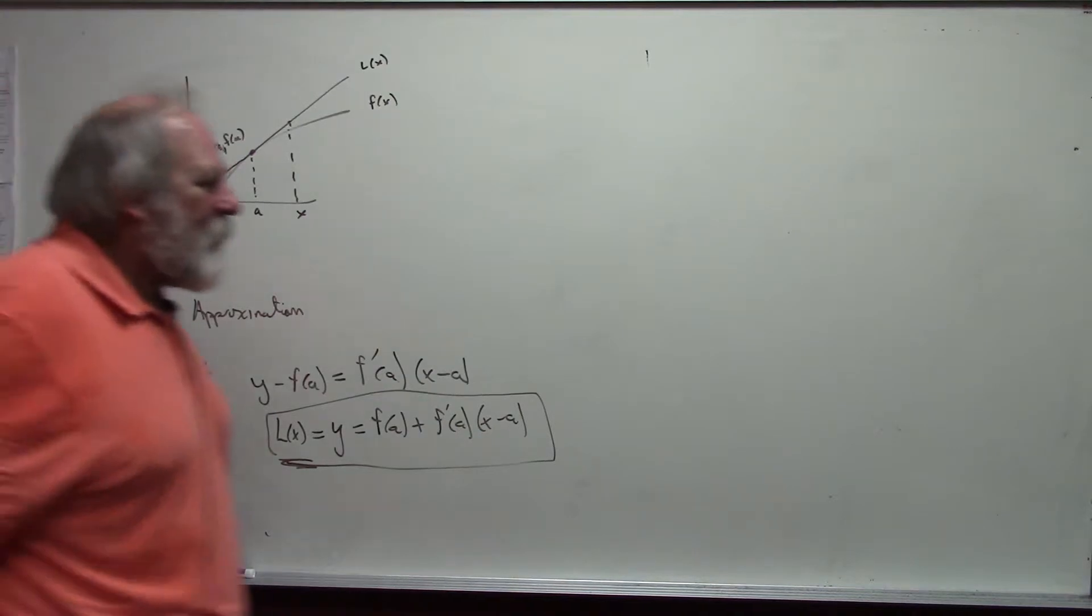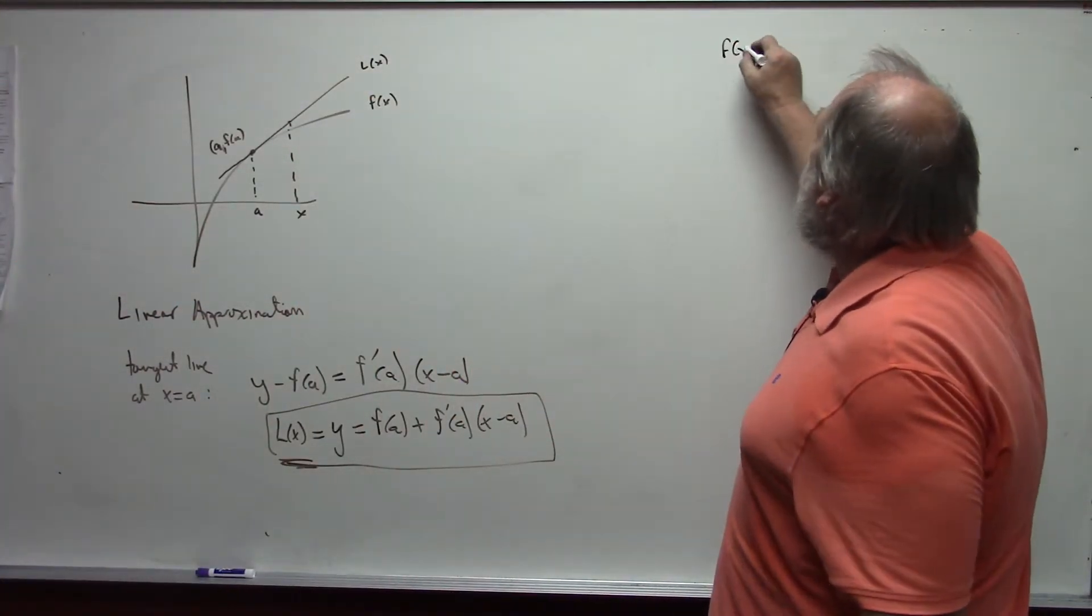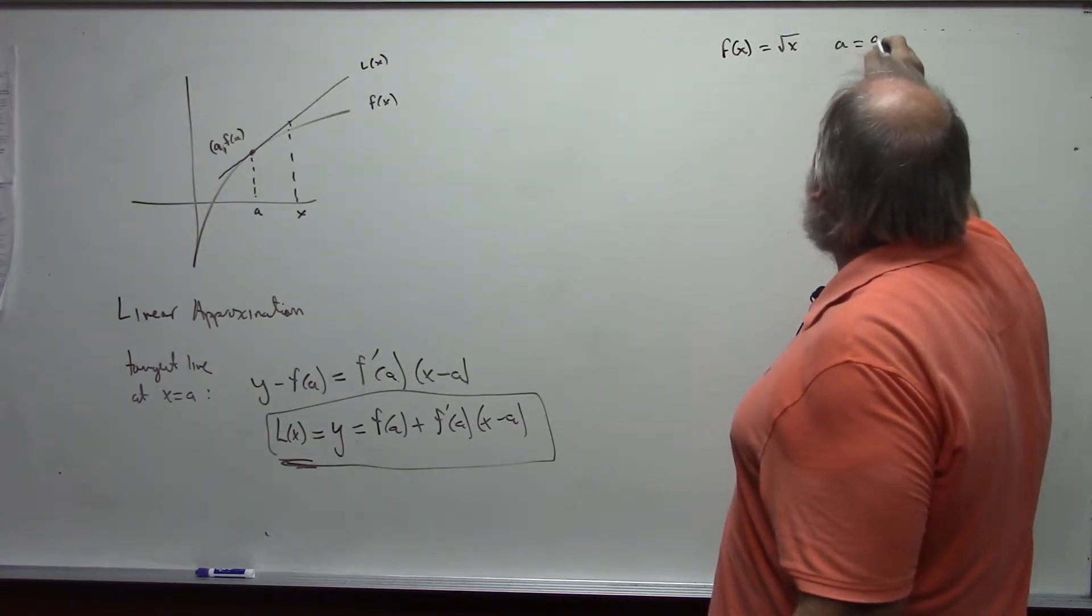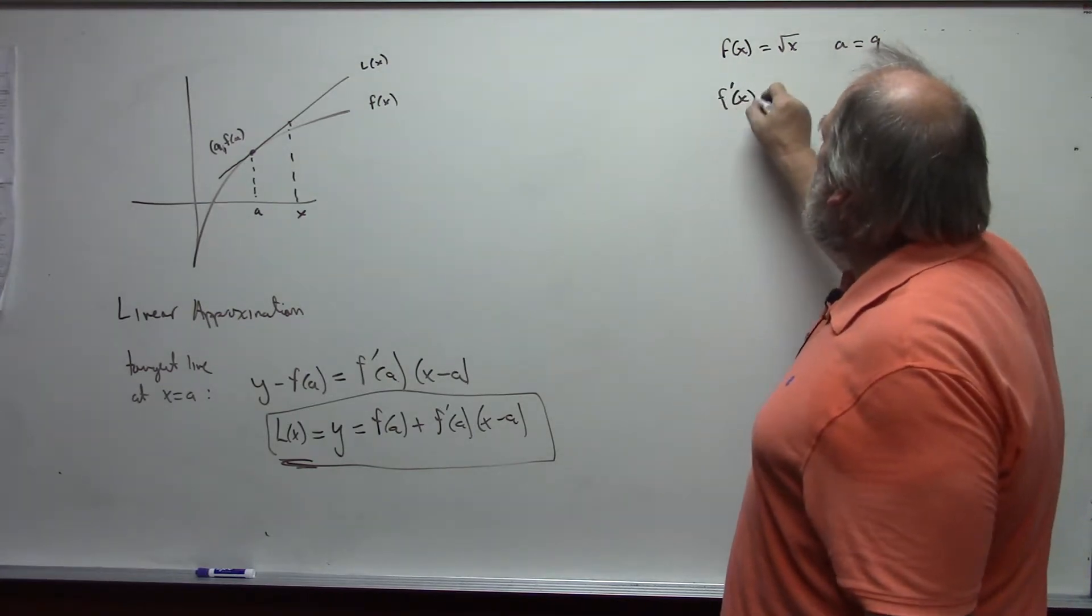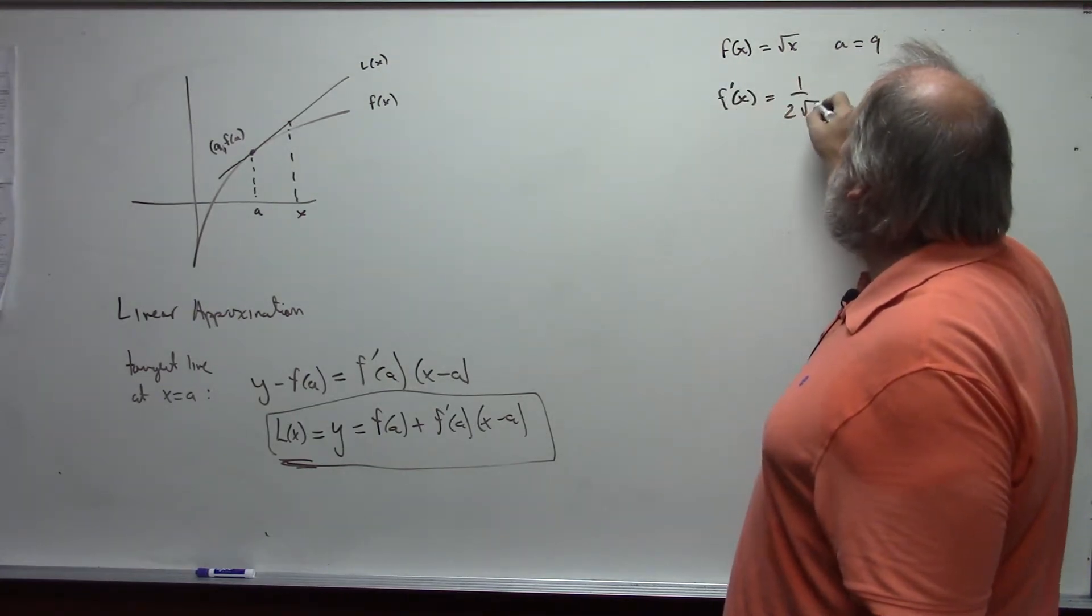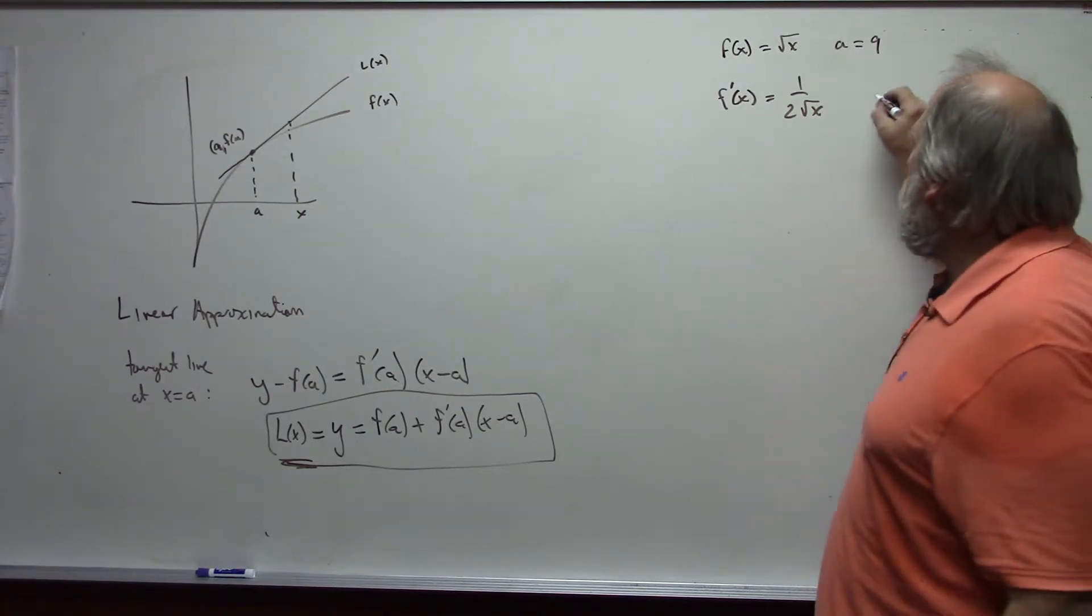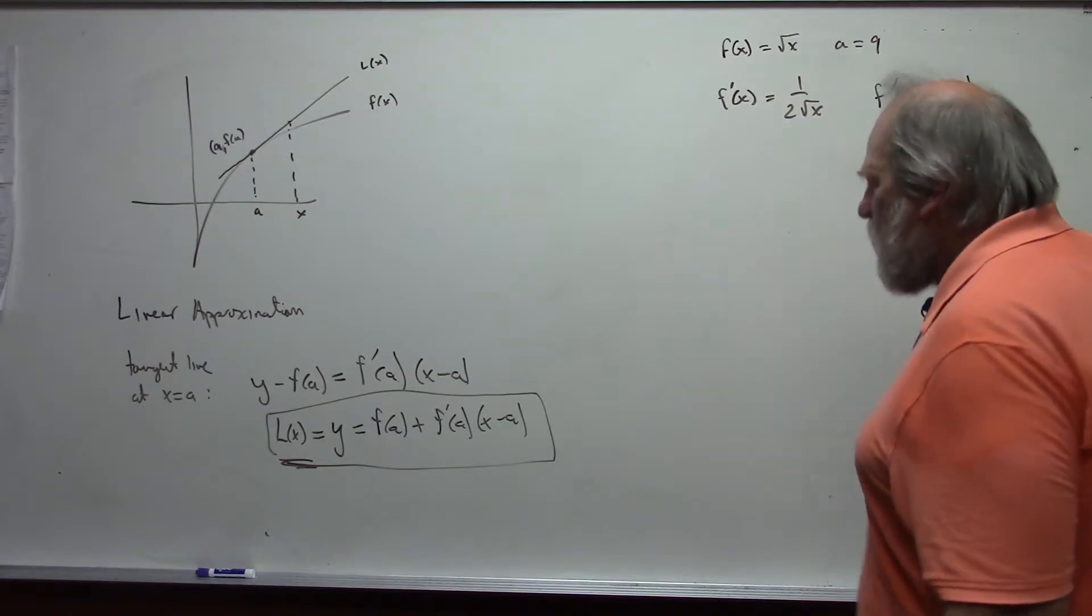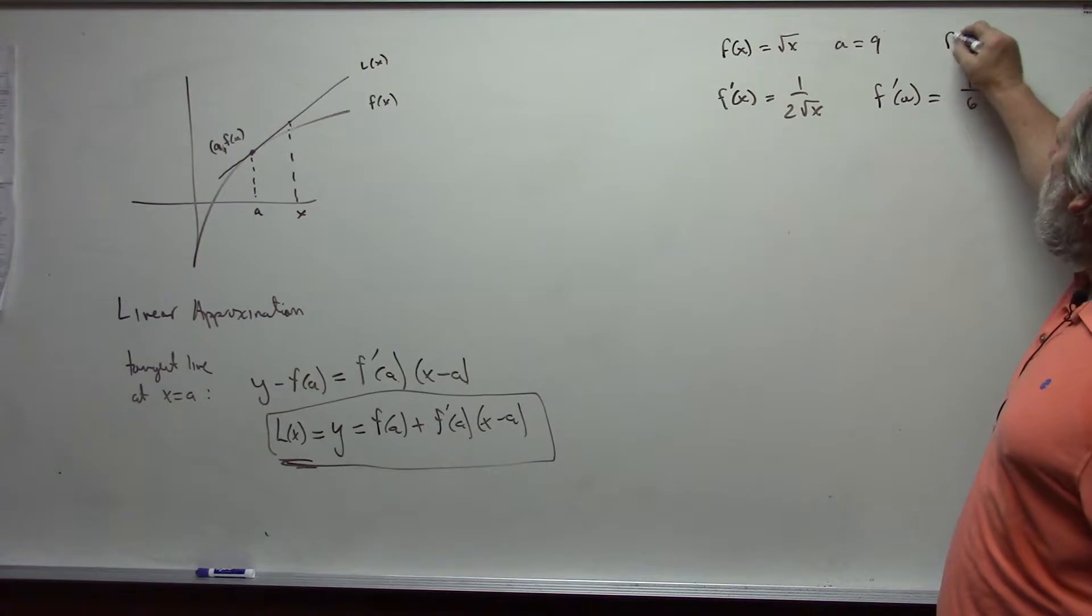And we can use this to approximate. For example, suppose I have f of x is the square root of x and my a is nine. Well, f prime of x would be one over two square roots of x, and so therefore f prime at a would be one-sixth. Of course, f of a is equal to three.